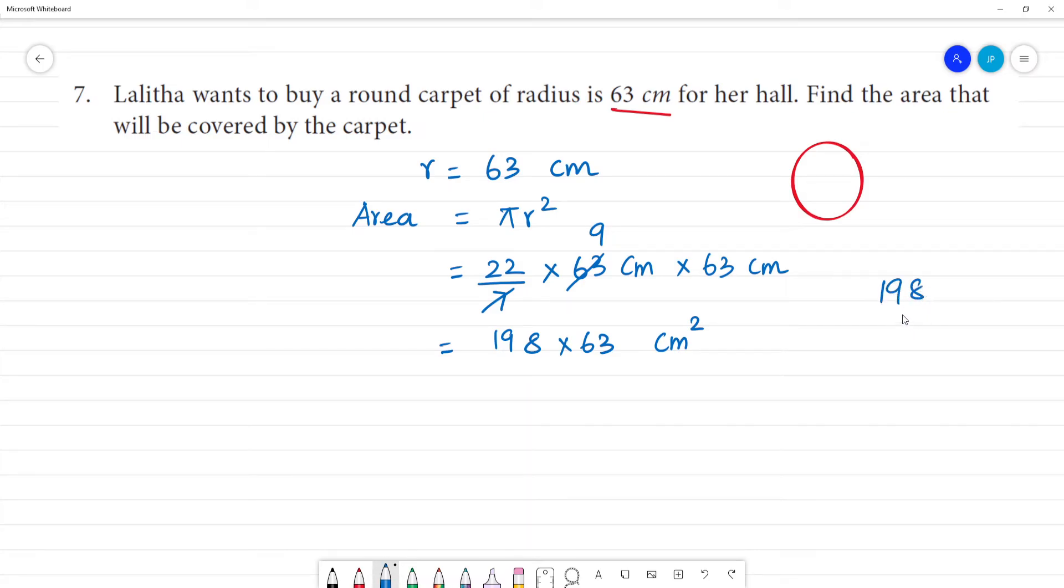1, 9, 8, 63 multiply. 8 times 3 is 24 remainder 2, 9 times 3 is 27 plus 2 is 29 remainder 2, 1 times 3 is 3 plus 2 is 5. Next,